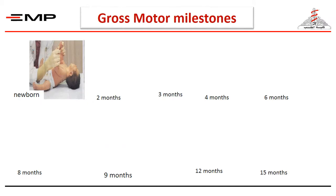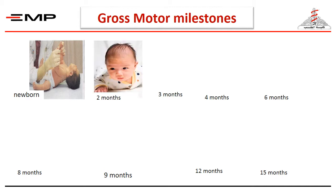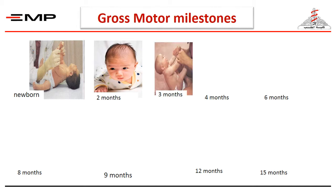There are important milestones in gross motor development. In this photo, you can notice a head lag in the newborn due to lack of neck support. Then, at the age of two months, infants are able to elevate the head and chest in prone position. At the age of three months, infants can support the neck and there is no head lag anymore.